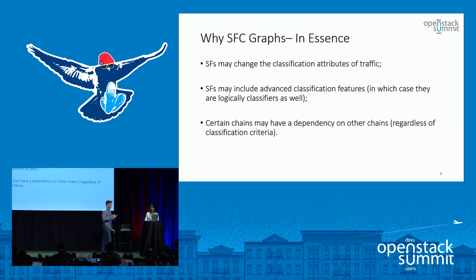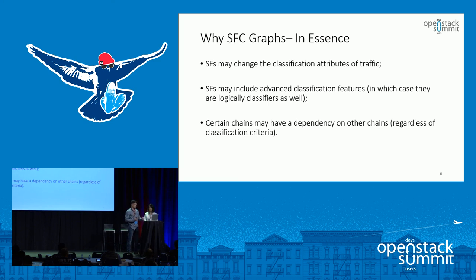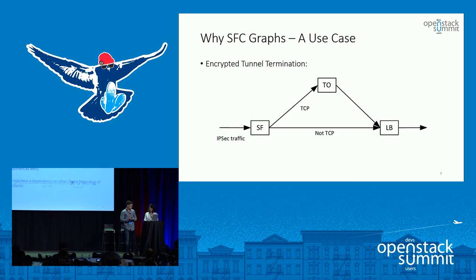We might also have certain service functions with advanced classification capabilities that can go deeper into packets and detect classifications that the main classifier cannot detect. In both of these cases, we may want to branch out of our current chain depending on these classification criteria. Or we may just want to have a dependency between port chains — many different port chains depending on the same chain regardless of classification.